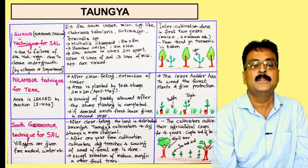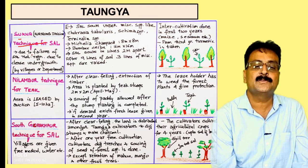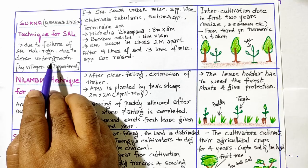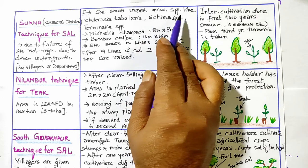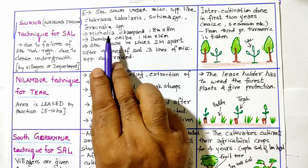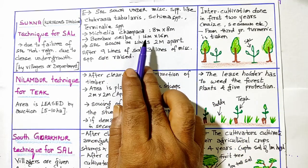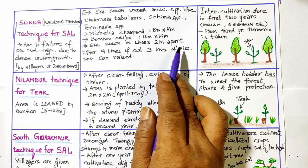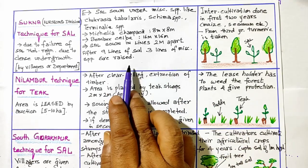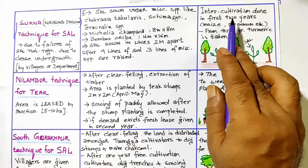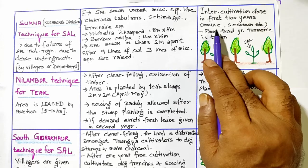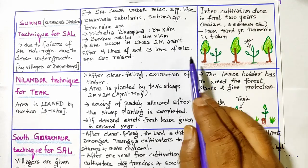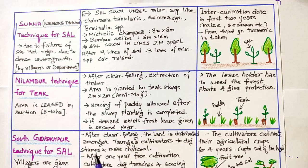One example is the Sukna–Kurseong division technique for sal, which is a village or departmental taungya. This was done due to failure of natural regeneration of sal from dense growth. Sal was sown under miscellaneous species like Chukrasia tabularis, Schima wallichii, or Terminalia species. Michelia champaca was planted at 8m × 8m and Bombax at 16m × 16m; sal was sown in lines 2m apart, with three lines of miscellaneous species after every nine lines of sal. Villagers did inter-cultivation — maize and sesamum in the first two years, and turmeric from the third year after crown closure.